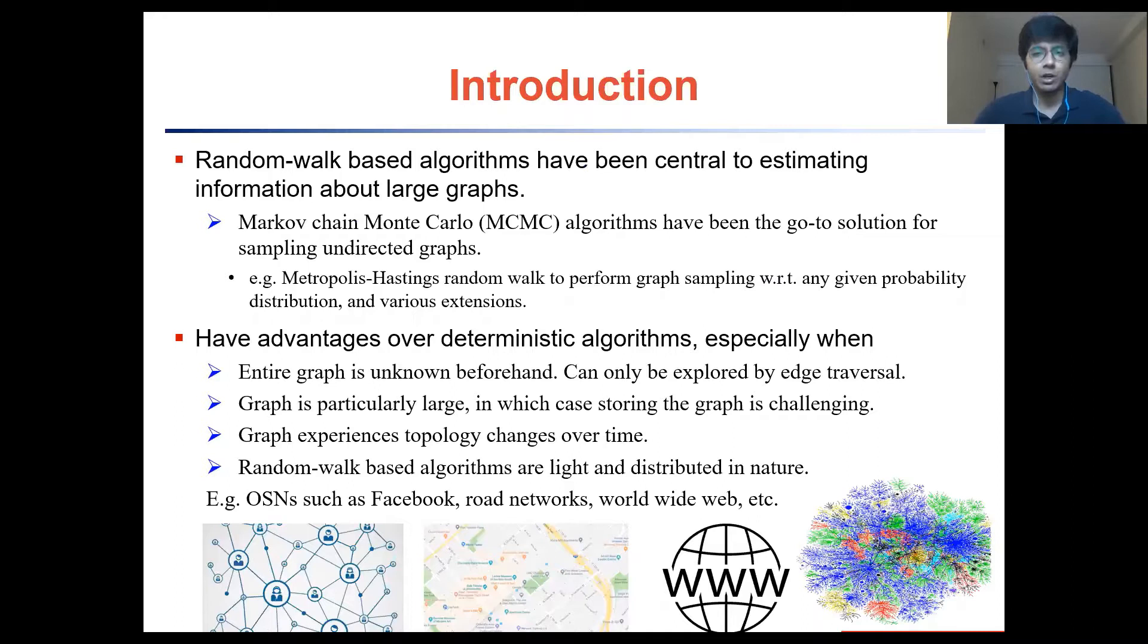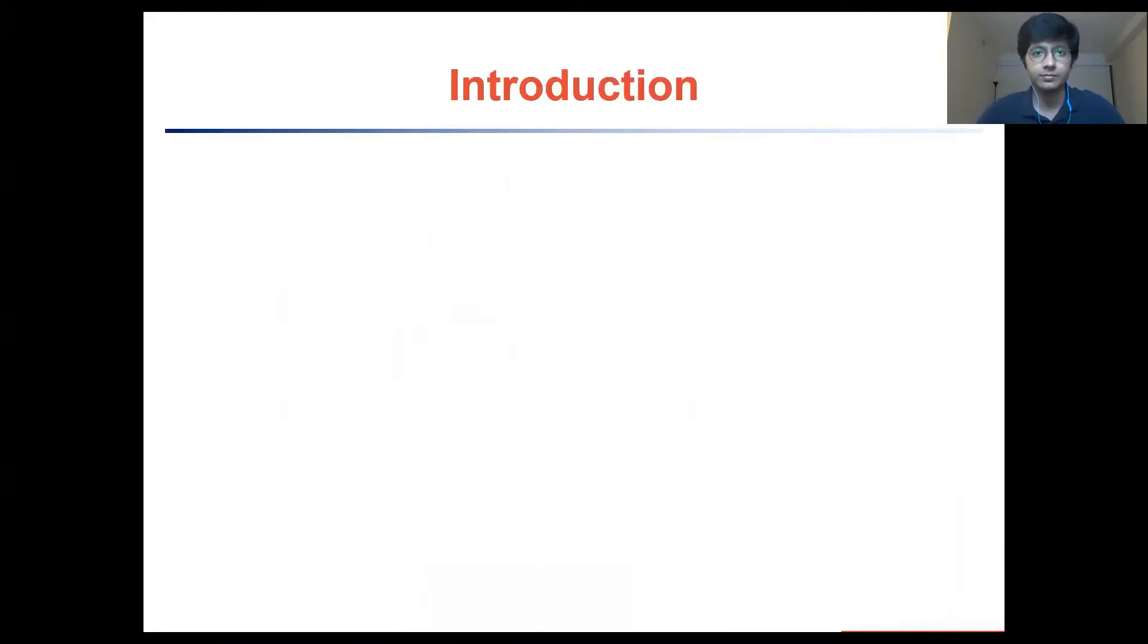Random walk based algorithms such as Markov chain Monte Carlo algorithms and their various extensions have been popular for estimating information about large graph structures. This is largely because they have advantages over their deterministic counterparts in scenarios where the entire graph is not known beforehand and needs to be explored first. And often this exploration is only possible by traversing the edges between the nodes of the graph. Sometimes the graph sizes can be so large that storing them efficiently is a challenge in itself. These graphs could also experience topological changes over time and it is usually difficult for deterministic algorithms to account for these dynamical changes. Examples of such graphs can be online social networks such as Facebook and Twitter, road networks such as ones we see on Google Maps and the World Wide Web. And random walk based algorithms, because of their inherently light and distributed nature, tend to perform well in such scenarios.